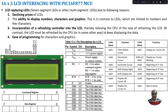Then we have two more pins — backlight plus and minus. We have LCDs in different colors like yellow, white, green, blue, etc. There is a small LED on the LCD, and this LED should be powered up to get that color. For that we make use of the backlight plus and minus pins, and connect them to a power supply.